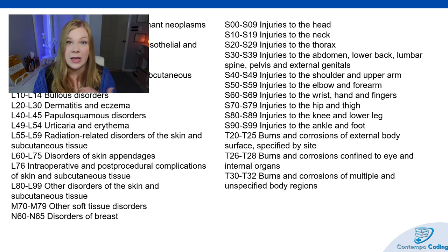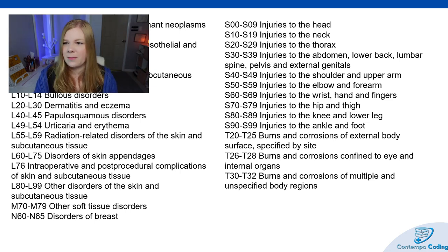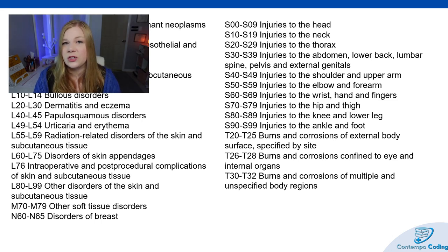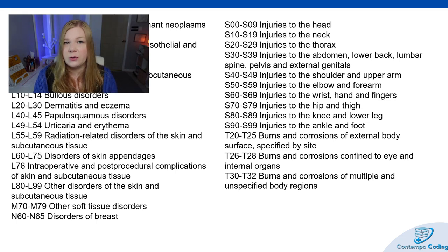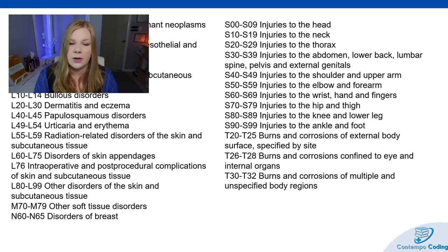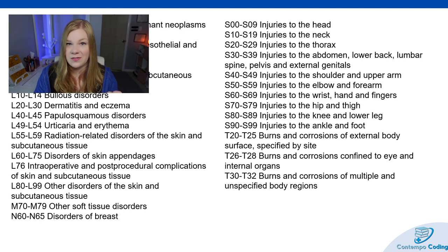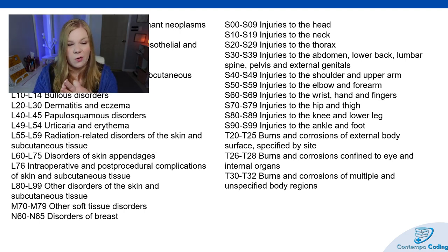For a laceration repair, that could happen in any area — head, neck, thorax, abdomen, shoulders, wrists, knees, ankles — not just lacerations but wounds of those areas. Those are included in integumentary coding. Pay close attention to additional digits. The S codes commonly need a seventh character: is it initial, subsequent, or sequela?